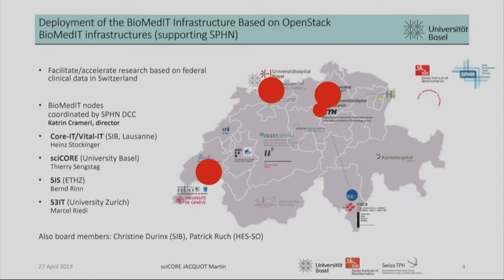Behind SPHN, we have a BiomedIT infrastructure. We will have some places where we have BiomedIT nodes. The goal is to facilitate and accelerate research based on federal clinical data in Switzerland. We will host some data and make it available to researchers. The BiomedIT nodes are coordinated by DCC, which stands for Data Coordination Center. Currently we have three sites: CoreIT (previously VitalIT, which changed its name), SciCore, and SIS at ETH. The University of Zurich is also participating but will not have a BiomedIT node.